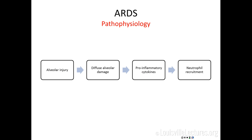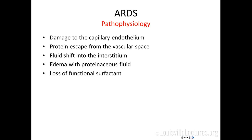In the pathogenesis of ARDS, you start with a vital injury — this can be a pneumonia, aspiration, or acute pancreatitis — leading to release of inflammatory markers and diffuse alveolar damage. There is a lot of release of inflammatory cytokines from the lung, and eventually neutrophil recruitment occurs, so there is a neutrophilic inflammation in ARDS. There is damage to the capillary endothelium, protein escape from the vascular space, fluid shifting to the interstitium, edema, and loss of functional surfactant.